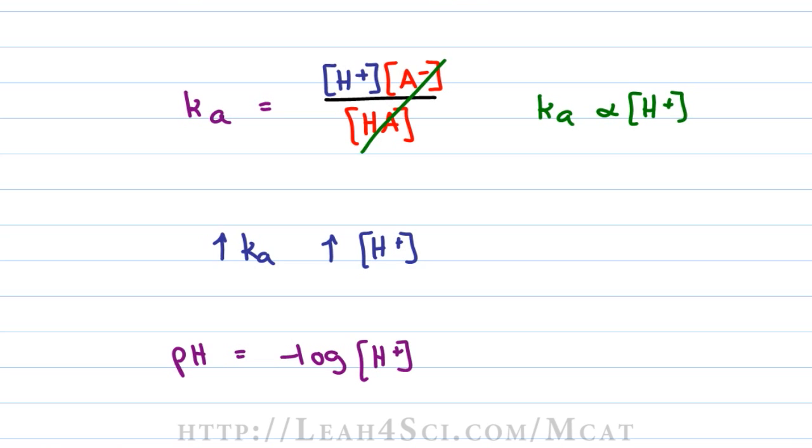Now recall that pH is equal to negative log of the H+ concentration and that the negative log will flip the relationship. So that if you have a high H+ concentration, you're going to have a low pH. The lower the pH, the stronger the acid. So a high Ka is a strong acid which means that if we have a low Ka, we'll have proportionally low H+ concentration which means we're going to get a high pH and therefore a weak acid or potentially a good base depending on how high that pH is.